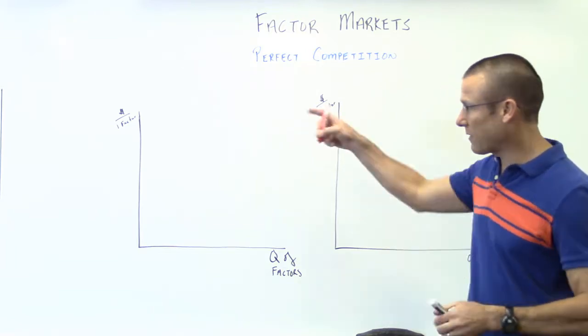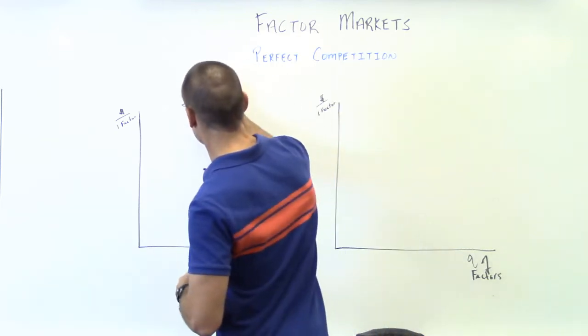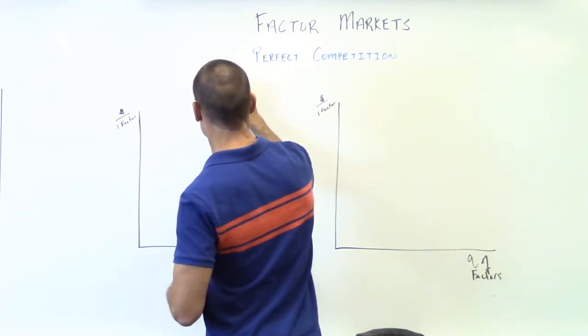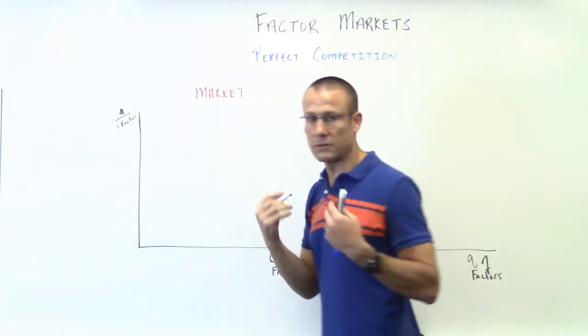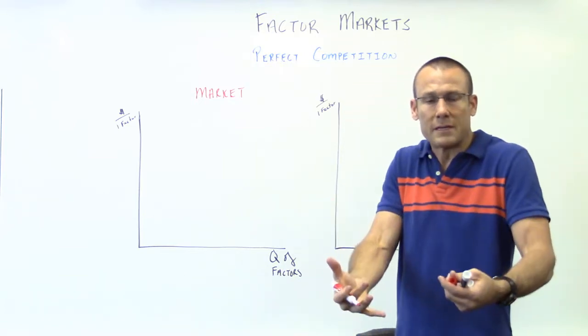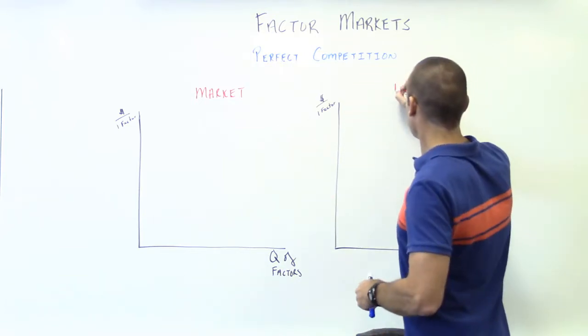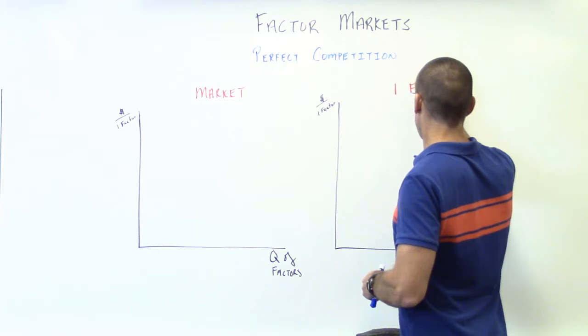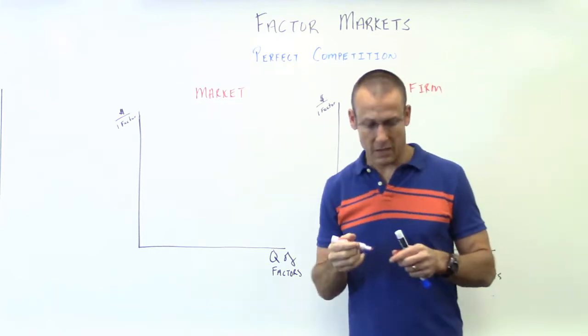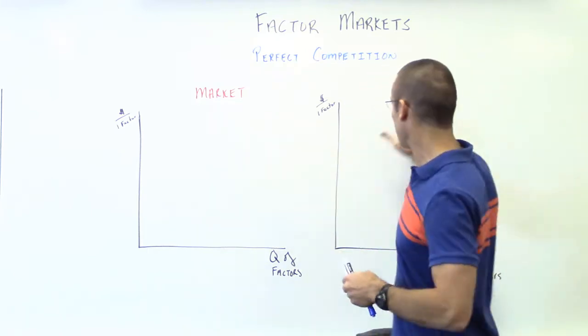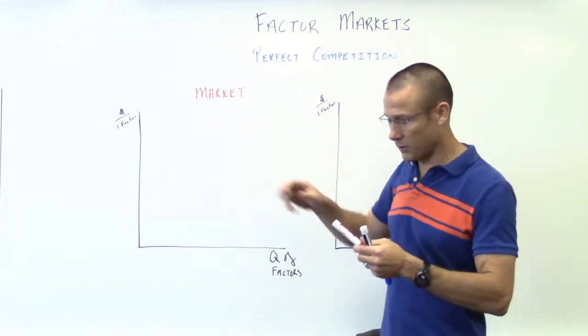Why? Because the graph on the left is the market. It's the market for a particular type of labor. Maybe even a particular skill. Over here is one firm hiring that particular type of labor. So we've got a labor market and one firm hiring from the labor pool.